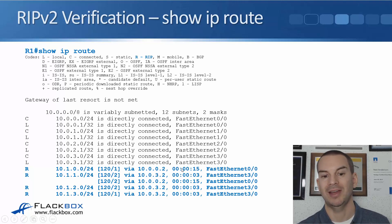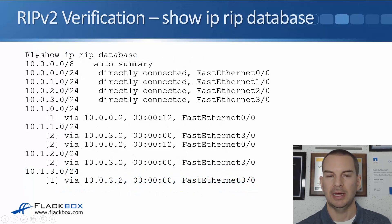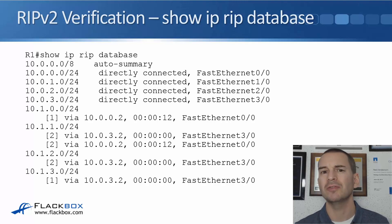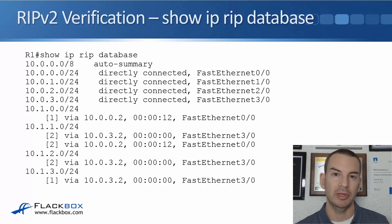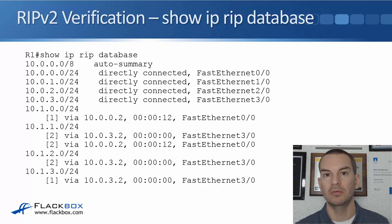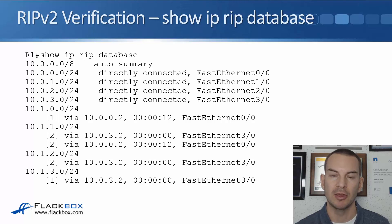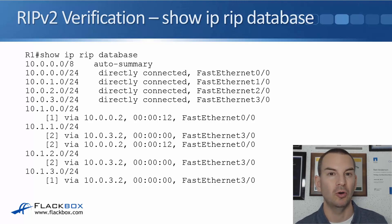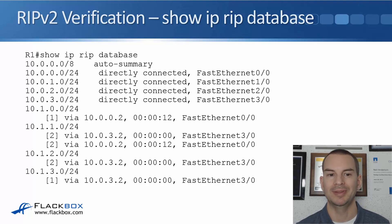The 'show ip route' output also shows the next hop address, when the last update was received, and the outgoing interface. We can also check the RIP database using 'show ip rip database'. This is useful when you have RIP neighbors but expected routes aren't appearing in the routing table — it lets you check whether routes were received by RIP at all, whether or not they made it into the routing table.